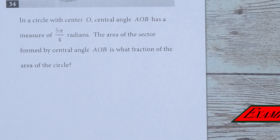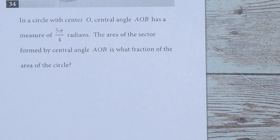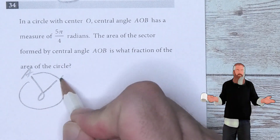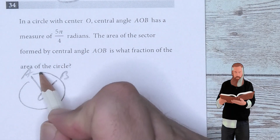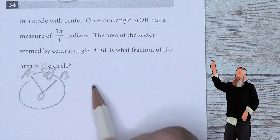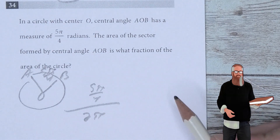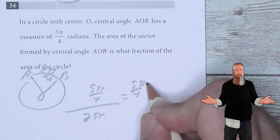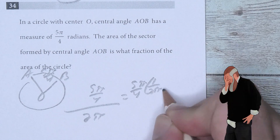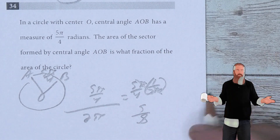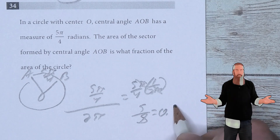In a circle with center O, central angle AOB has a measure of 5 pi over 4 radians. We need the area of the sector formed by the central angle. The fraction of the circle is 5 pi over 4 divided by 2 pi, which equals 5 pi over 4 times 1 over 2 pi. The pi's cancel, giving 5 over 8, or 0.625 as a decimal.